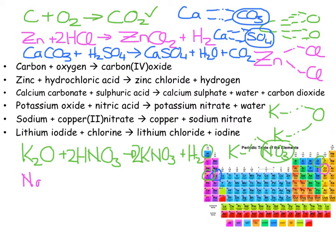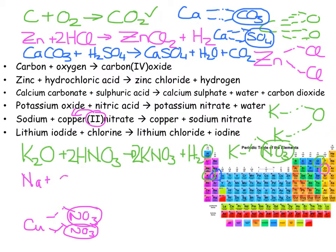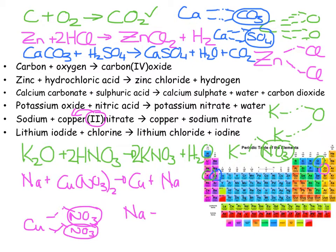Sodium Na, plus copper(II) nitrate — copper is a transition element, so the stock notation tells me it has 2 arms, Cu²⁺. Nitrate is NO₃ from the sheet. Hold hands: I need two nitrate groups, so Cu(NO₃)₂. Products: copper metal, plus sodium nitrate — sodium has valency 1, nitrate has valency 1, so NaNO₃.